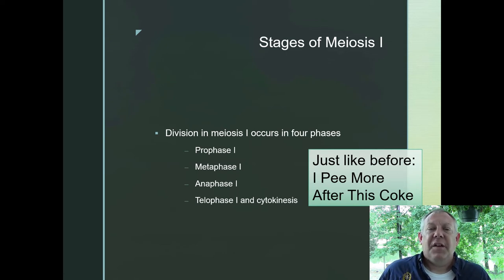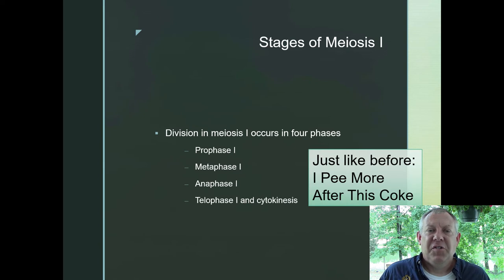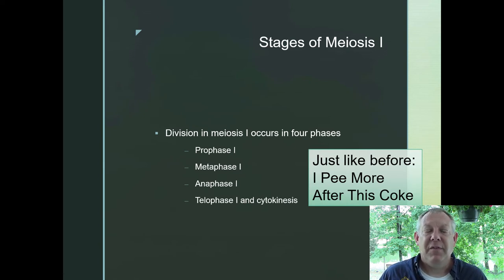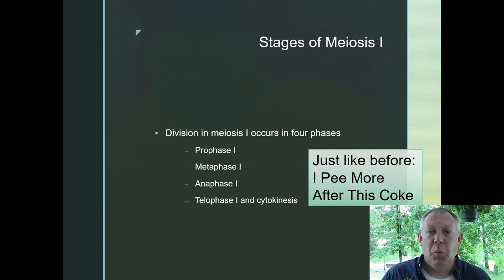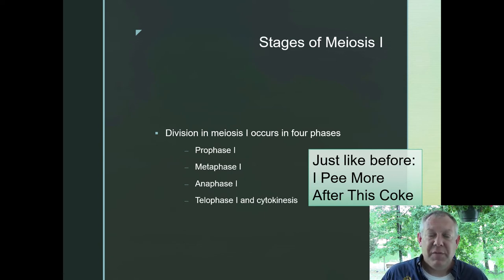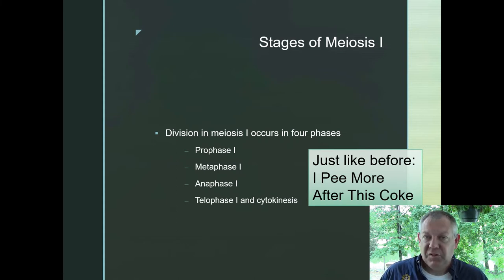The stages are named the same and come in the same order. To remember them: 'I pee more after this coke' — Interphase, Prophase, Metaphase, Anaphase, Telophase, and then Cytokinesis. Since we're talking about meiosis I, we label them prophase I, metaphase I, anaphase I, telophase I, just to keep them separate from meiosis II.